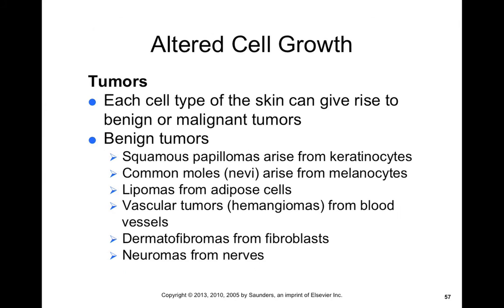Next we'll talk about altered areas of cell growth — the proliferative diseases and tumors. Each cell type of the skin can give rise to a benign or malignant tumor. The major cell type of skin is the keratinocyte, so a squamous papilloma comes from the keratinocytes. Melanocytes can turn into moles, lipomas come from adipose cells you find within dermis and subcutaneous tissue, vascular tumors called hemangiomas come from blood vessel proliferation, dermatofibromas come from fibroblasts, and neuromas come from nerves.